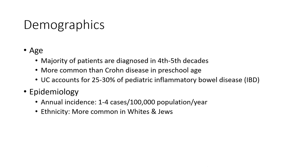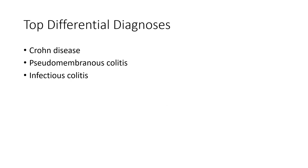Ulcerative colitis accounts for 25-30% of pediatric inflammatory bowel disease. Epidemiology: annual incidence is 1-4 cases per 100,000 population per year. Ethnicity: more common in white and Jewish populations. Top differential diagnoses include Crohn's disease, pseudomembranous colitis, and infectious colitis.